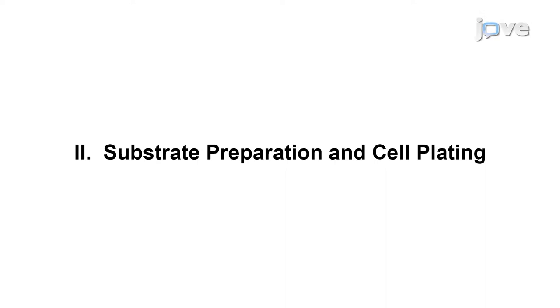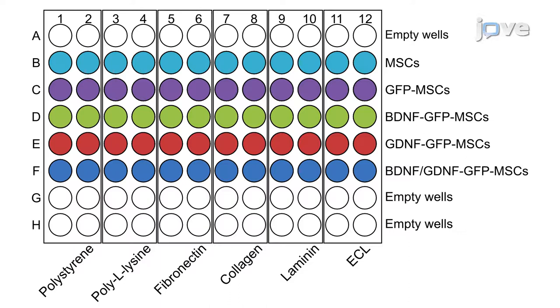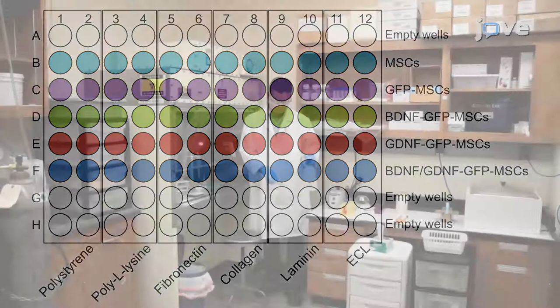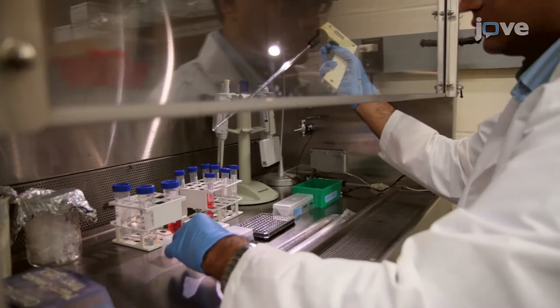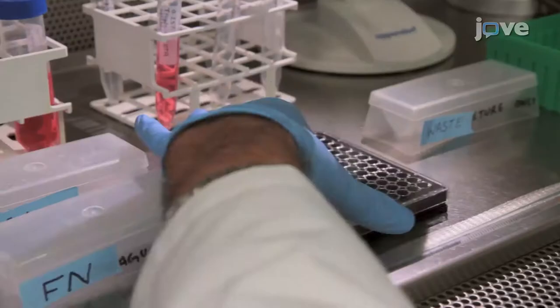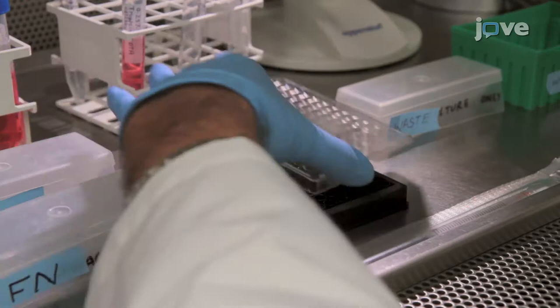To begin, create a map, as shown here, of the 96-well plate outlining the different substrates and cell types to be examined. Under a sterile culture hood, prepare a workstation with different substrates and a 96-well plate. Add 100 microliters of substrate solution to each well according to the map. Then use a strip of parafilm to seal the lid and store at 4 degrees Celsius overnight.